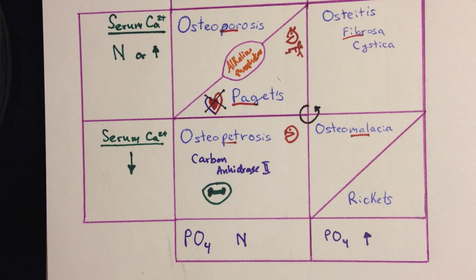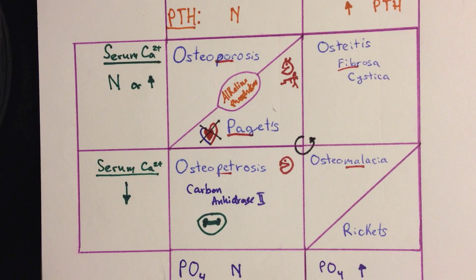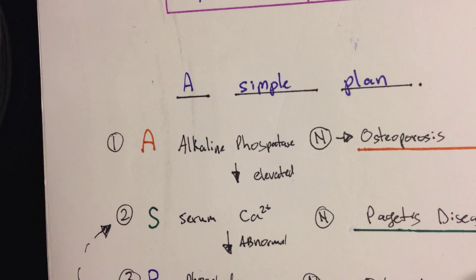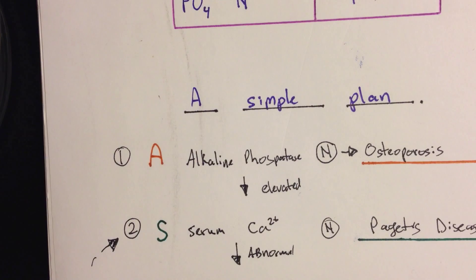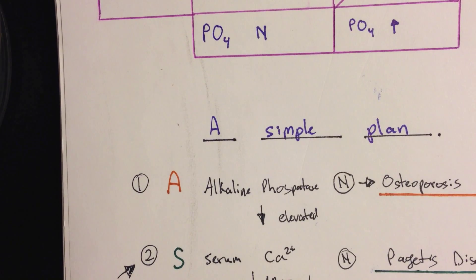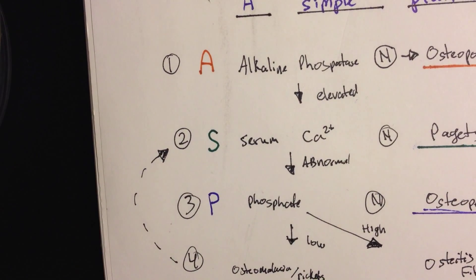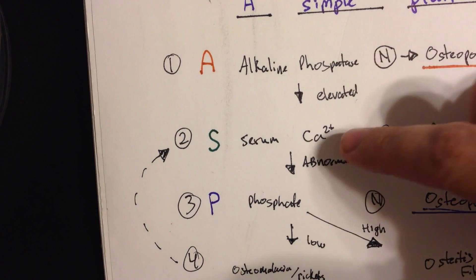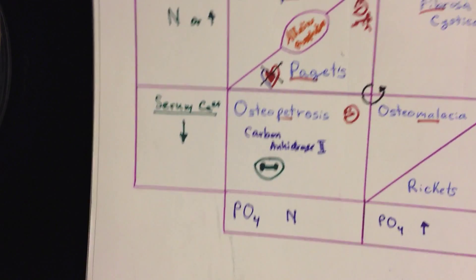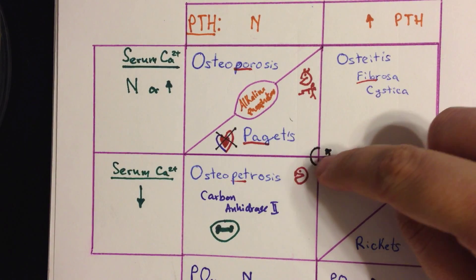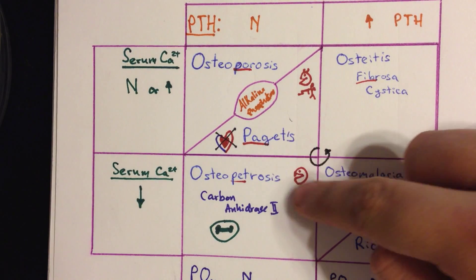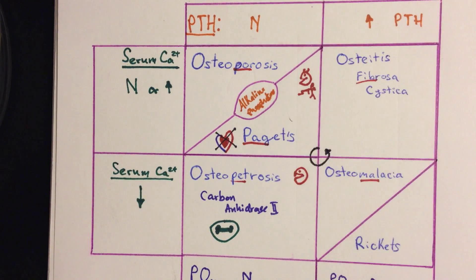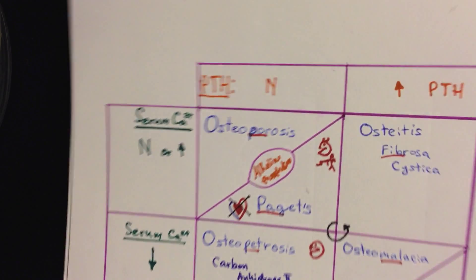This chart is useful, but you need a quick way to solve this on the exam. The mnemonic is 'A Simple Plan' — referencing the three lab values: Alkaline phosphatase, Serum calcium, and Phosphate. You begin at one end of the chart and move counterclockwise until you get to osteitis fibrosa cystica.